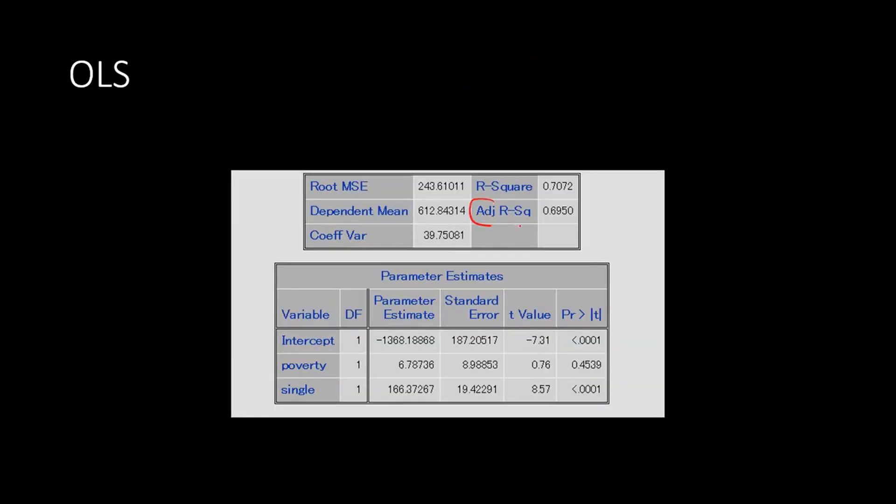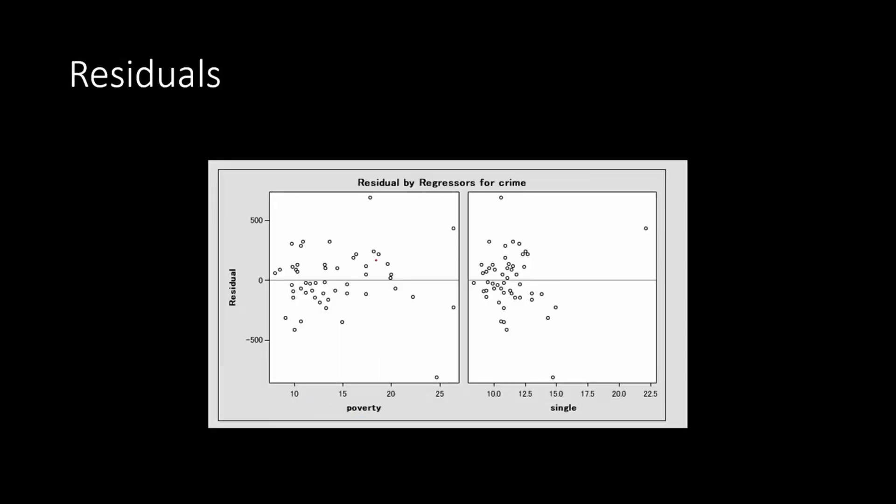We have the R square of 70% and so on. And just one variable is significant. The single parent is significant and poverty is not a significant variable. So that's the result from the ordinary square regression. You can also plot the residuals from the OLS regressions and you can see that some of the residuals are far away from the other residuals. So there's a presence of outliers. That's what it confirms.